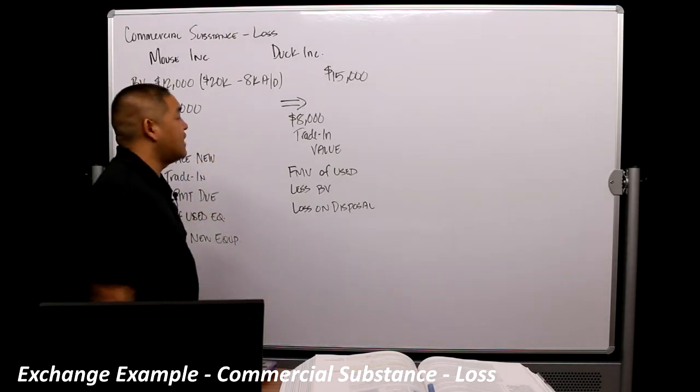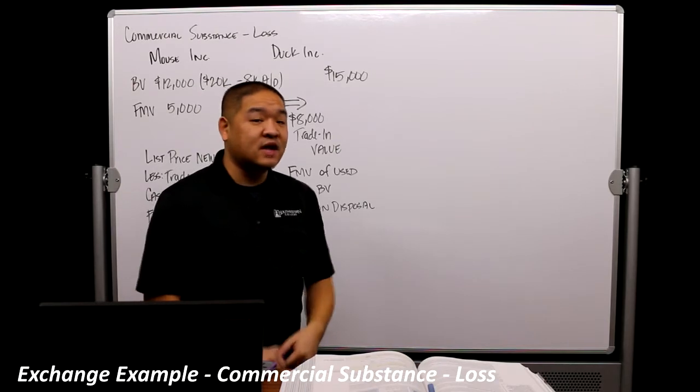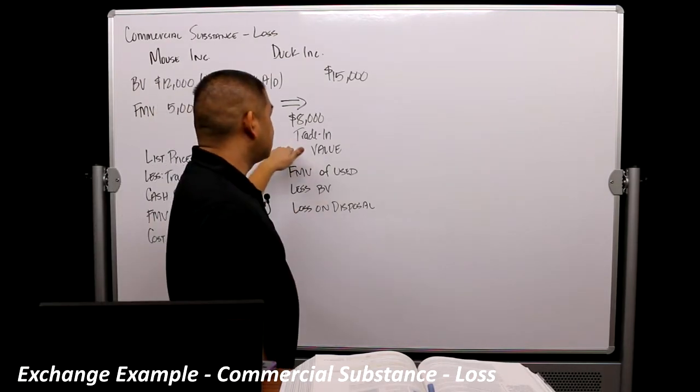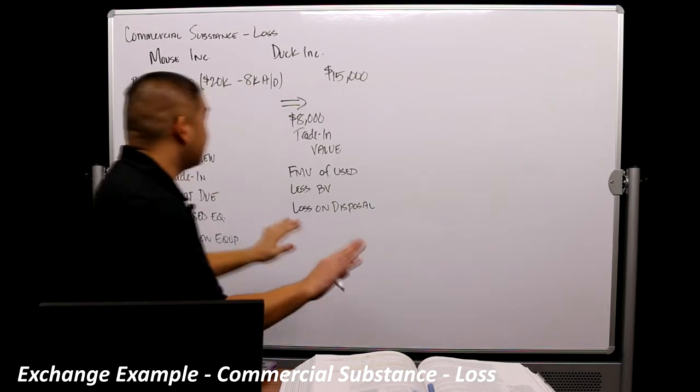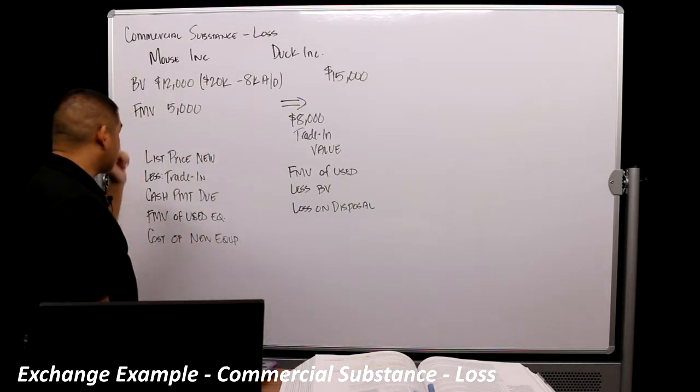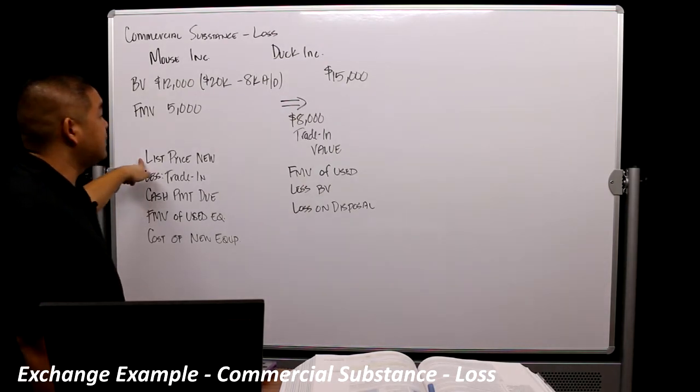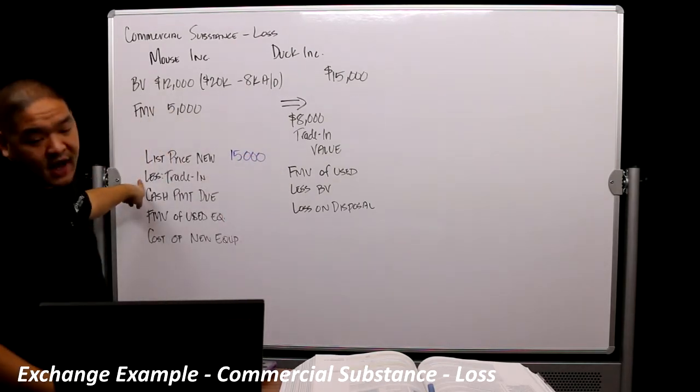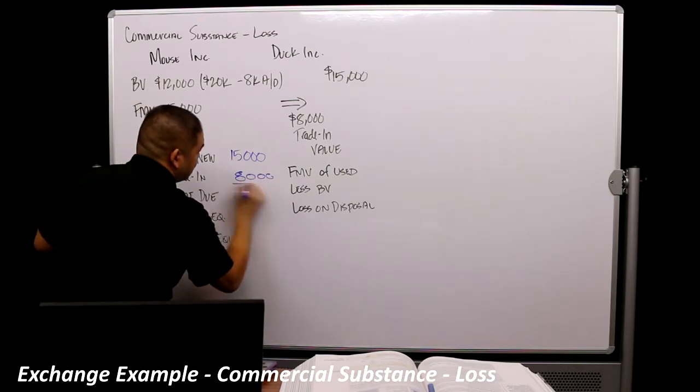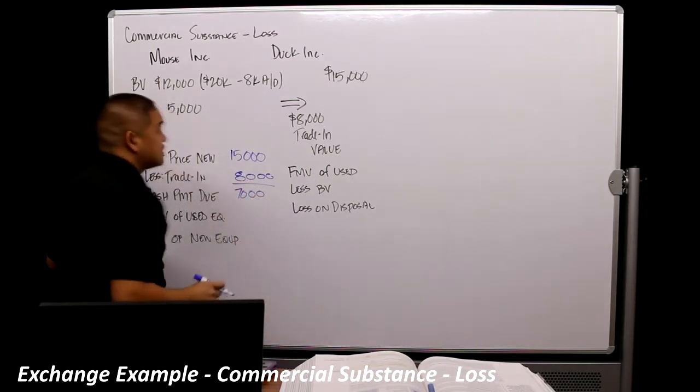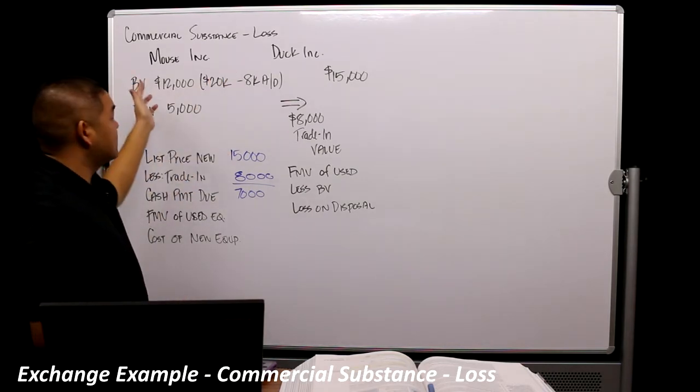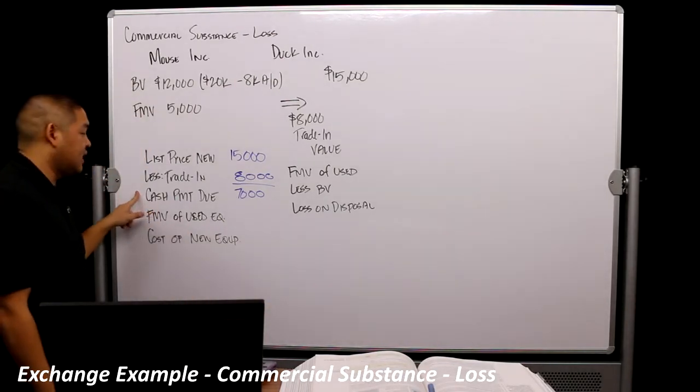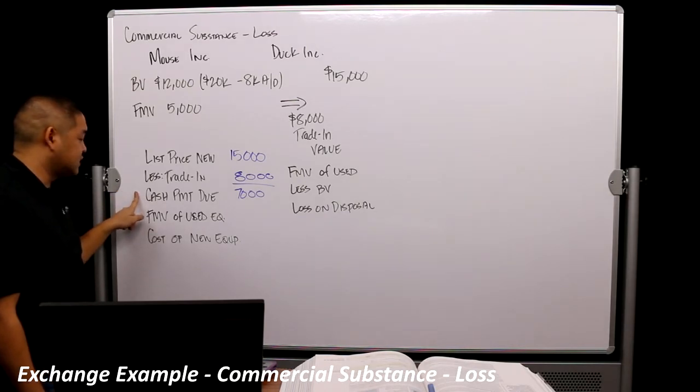So the other thing to think about it is that this $15,000 may be an inflated price. So it's not actually what the cost of the equipment would have been, but they've inflated it so much so they can get people in. And then the trading value goes a little bit higher to get them to buy it. So whatever the case is, we got to calculate it differently. So first thing we need to calculate is the list price for the new item. So the list price is $15,000 for the new item. And we're going to subtract in our trade-in value. So our trade-in value is $8,000. And so now we have a difference of $7,000.